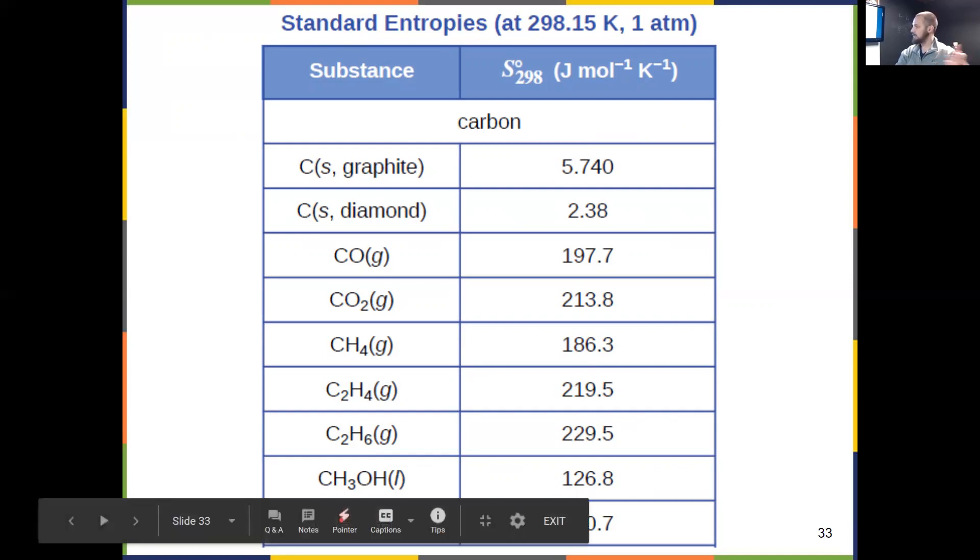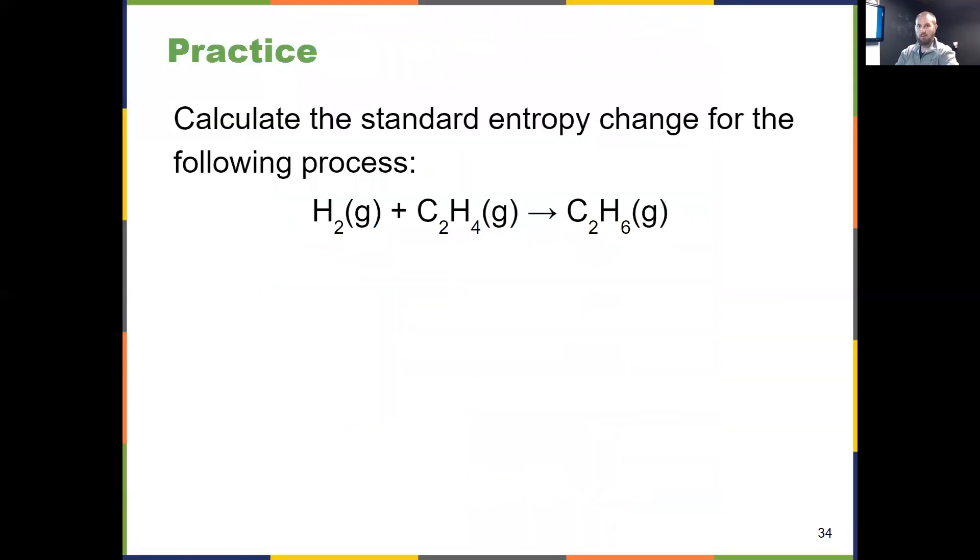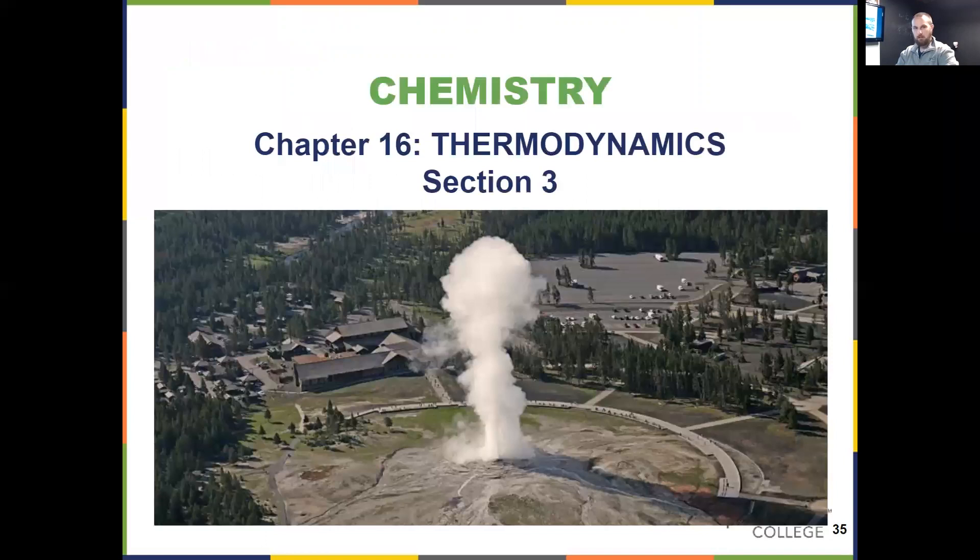The formula would look exactly like what we just saw, with the exception being H's instead of S's. Your entropies multiplied by their coefficients, add together all products, add together all reactants, remembering to multiply by their coefficients, then products minus reactants tells you the entropy change for your reaction. Here's an example calculation - give it a try on your own, figure out if that would be spontaneous or non-spontaneous. We will resume in video three, talking about Gibbs free energy.